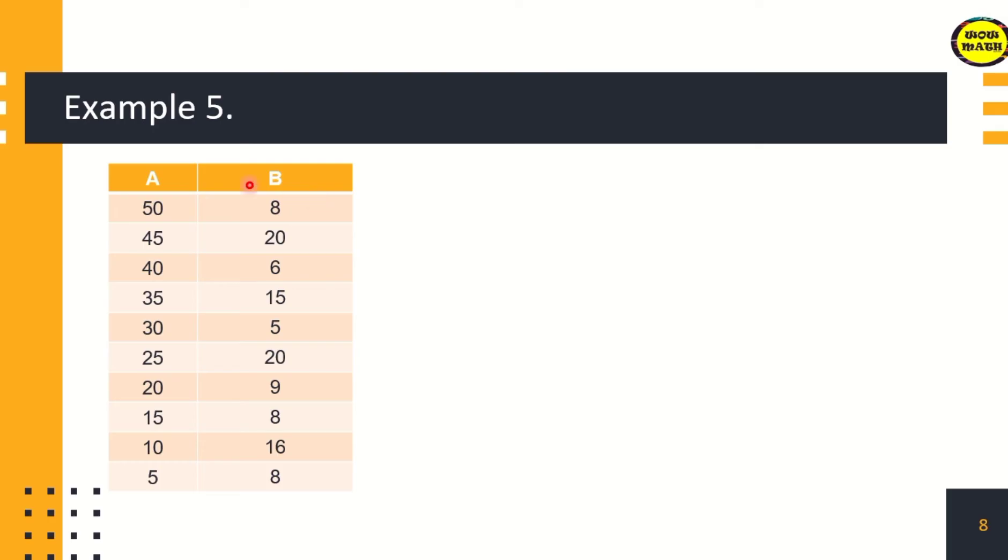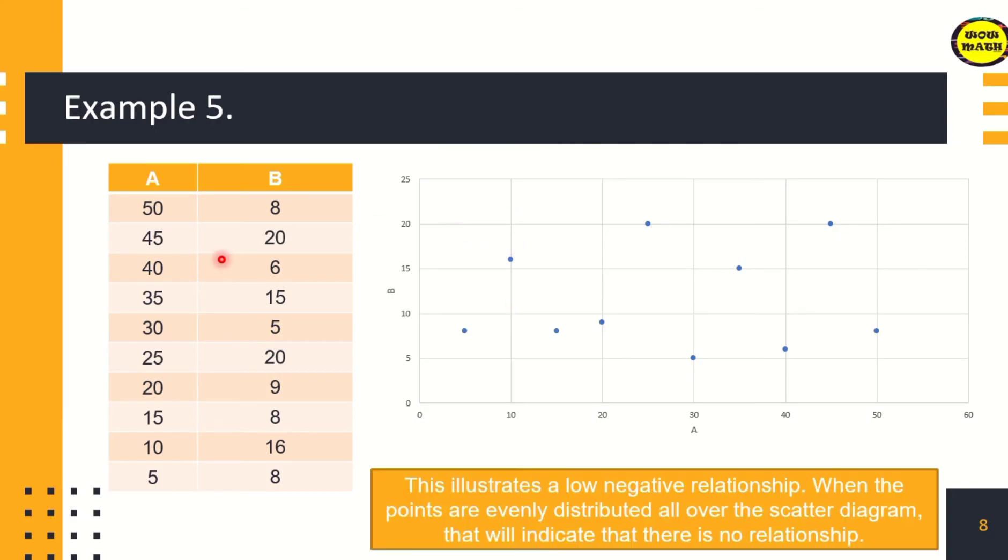Given the two items again, if you construct a scatter plot using Microsoft Excel, this is what we get. The dots are really scattered all over. You cannot get a clear direction whether it's increasing to the right side or going down. Therefore, when we get this result with scattered dots, that is a low negative relationship. When the points are evenly distributed all over the scatter diagram, that will indicate there is no relationship.